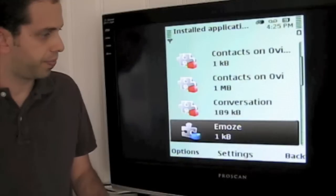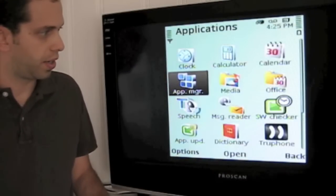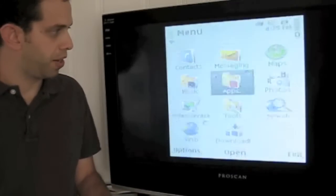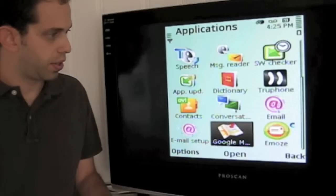Back out of there. Back again. And exit. Now back to our home screen. To get to Emos from the home screen, you hit Menu, Apps, and scroll down to Emos.